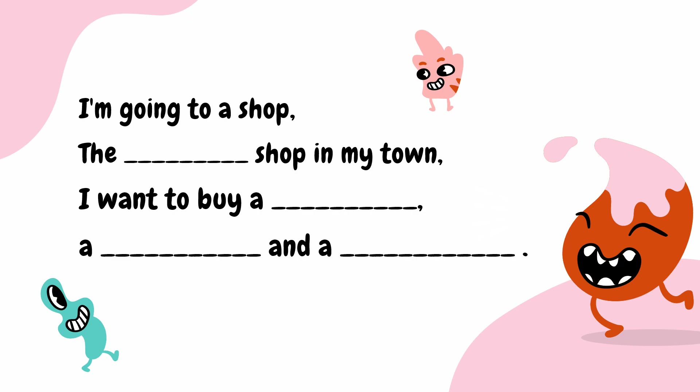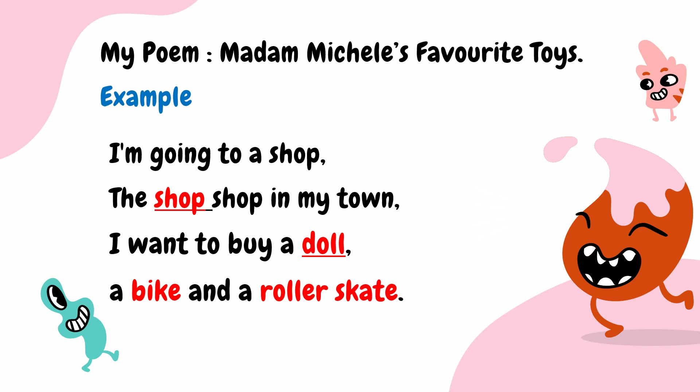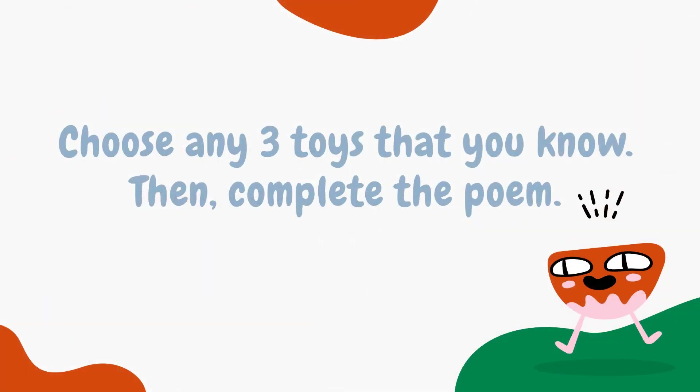Now let's look at the sample answer. This is the example of the completed poem. If you look here, the words in red color are the answers. You can use any types or any names of toys to fill in the blank. You need to remember to choose any three toys that you know — not necessarily only the toys you have learned. You can tell the name of toys you really like at home, or mention any toy as long as it is still a toy.